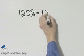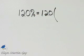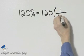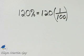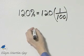So I have 120. Instead of the percent symbol, I'll write its meaning as a fraction, 1 over 100. Now let's go ahead and multiply.